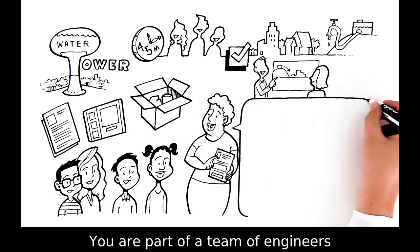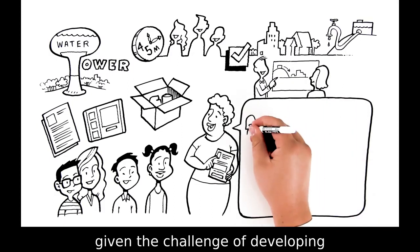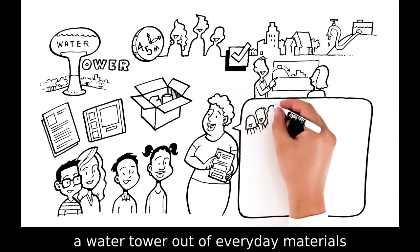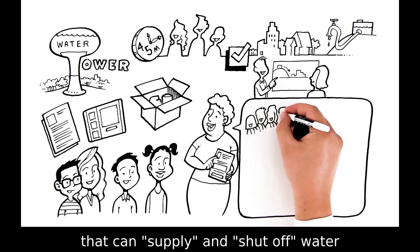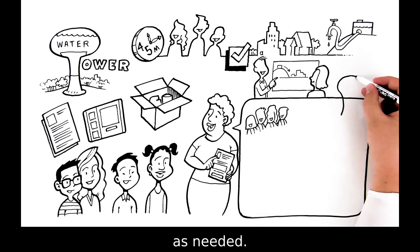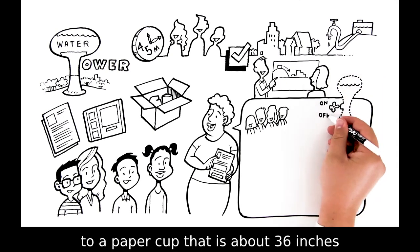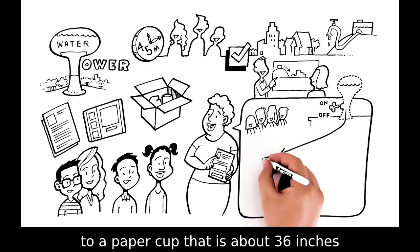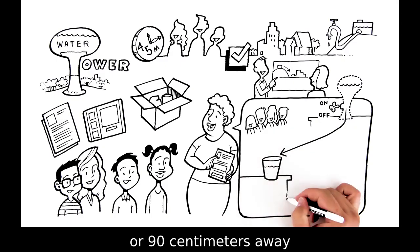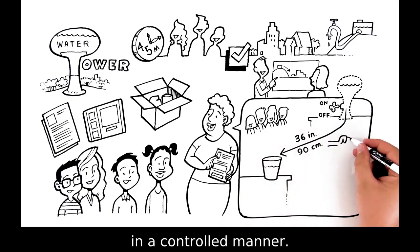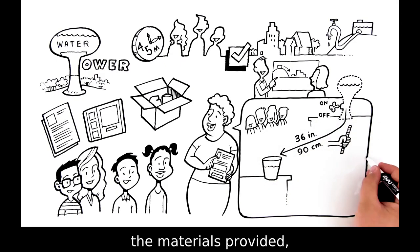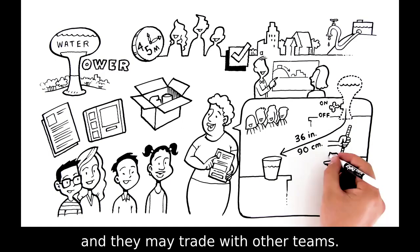You are part of a team of engineers given the challenge of developing a water tower out of everyday materials that can supply and shut off water as needed. The water tower must be able to deliver water or a water substitute to a paper cup that is about 36 inches or 90 centimeters away in a controlled manner. Teams can use only the materials provided, and they may trade with other teams.